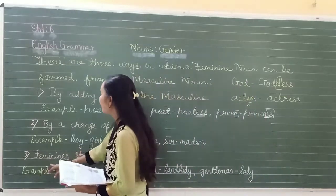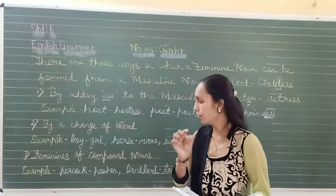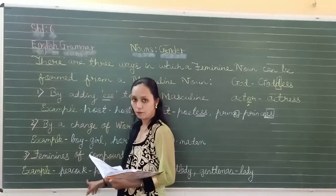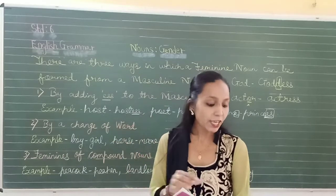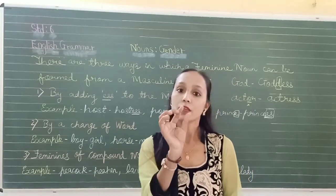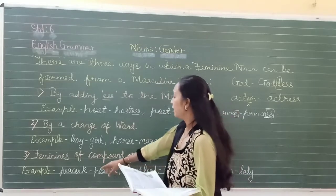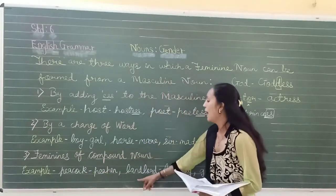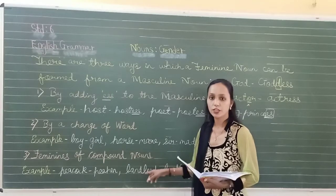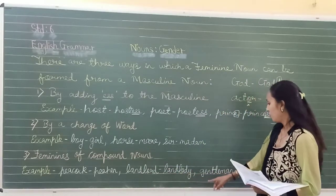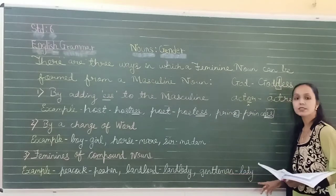The third rule is feminines of compound nouns. A compound noun is made of two words. Example: peacock is a compound noun because it is made up of 'pea' and 'cock'. Peacock becomes peahen. Landlord becomes landlady — this is also a compound noun made of two words. Gentleman becomes gentlewoman.